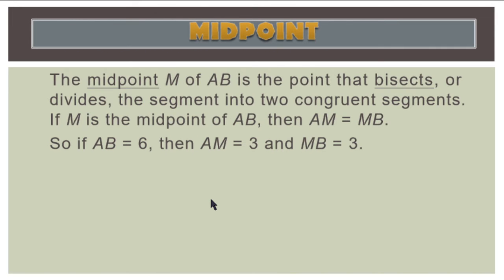Let's proceed with the midpoint. A midpoint is a point that bisects or divides the segment into two congruent segments. So if we have M as our midpoint and the line segment is AB, then M bisects line segment AB into two congruent parts, which are AM and MB. For example, if the measurement of line segment AB is 6, then AM equals 3 and MB equals 3.